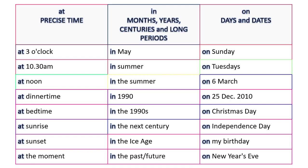What about 'on'? We can say: on Sunday, on Tuesdays, on the 6th of March, on the 25th of December 2010, on Christmas Day, on Independence Day, on my birthday, on New Year's Eve.